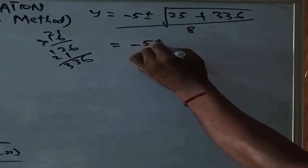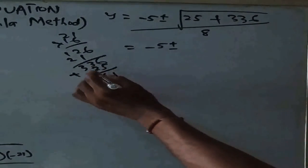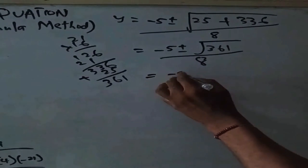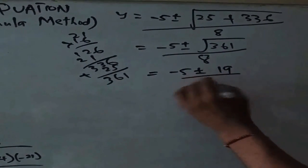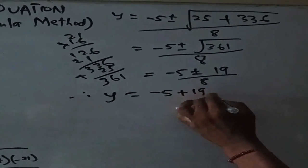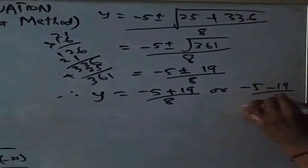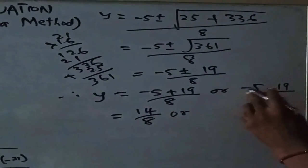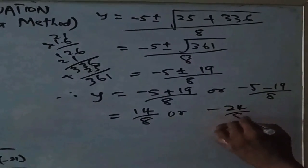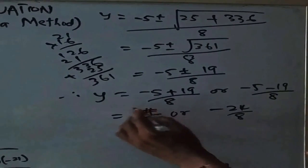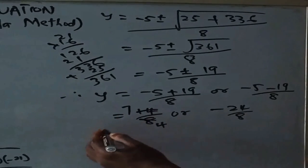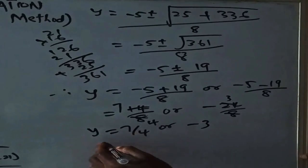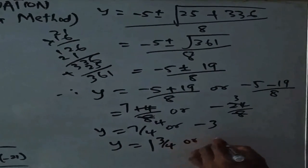So we have minus 5 plus or minus the square root of 25 plus 336, which gives the square root of 361, equal to 19, over 8. Therefore y equals minus 5 plus 19 over 8, or minus 5 minus 19 over 8. That gives 14 over 8 or minus 24 over 8, which simplifies to 7 over 4, or minus 3.